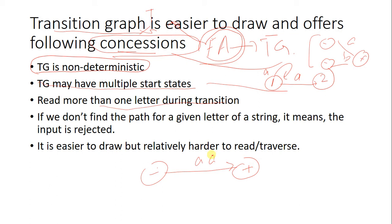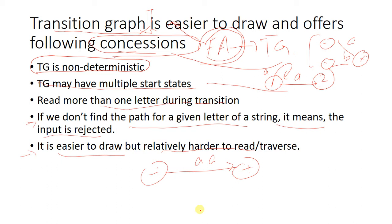The fourth concession is that if you do not find a path for a given letter of a string, the input is rejected. Finally, transition graphs are easy to draw because you have so many concessions, but harder to read because you may be confused whether to read a single letter or multiple letters, and also due to non-determinism.